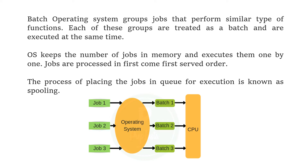The OS keeps a number of jobs in memory and executes them one by one. Jobs are processed in first-come, first-served order. This process of placing the jobs in a queue for execution is known as spooling.